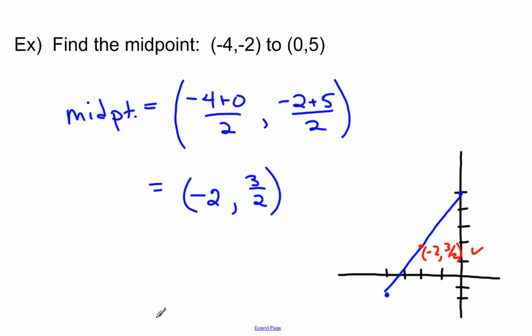Now let's take a look if I were to graph the original points. So down here is negative 4, 2, up here is 0, 5, and then negative 2, 3 halves would be right about here, and that does look like it's in the midpoint, even though this is not a perfectly scaled graph.